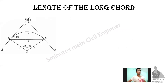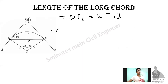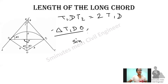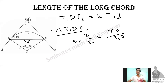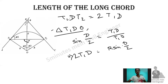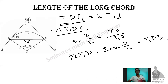The length of the long chord. The long chord is T1 to T2. The value is 2 times T1D. In triangle T1DO, T1D equals R times sin(D/2), so the long chord T1T2 equals 2R sin(D/2).